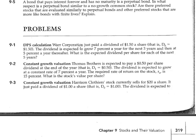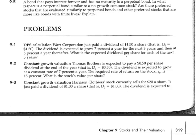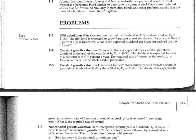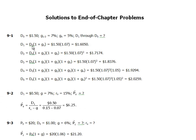War Corporation just paid a dividend of $1.50 a share, so D0 = $1.50. The dividend is expected to grow 7% a year for the next three years, and then at 5% a year thereafter. What is the expected dividend per share for each of the next five years? This is a relatively simple problem.